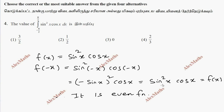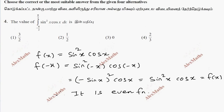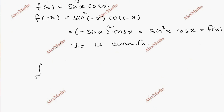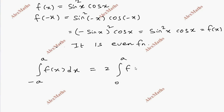Since it is an even function, we apply the property: the integral from -a to a of f(x) dx equals 2 times the integral from 0 to a of f(x) dx.